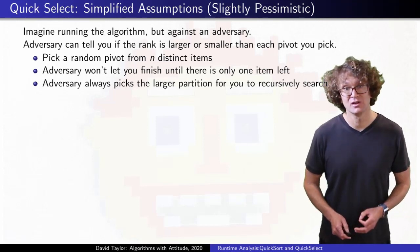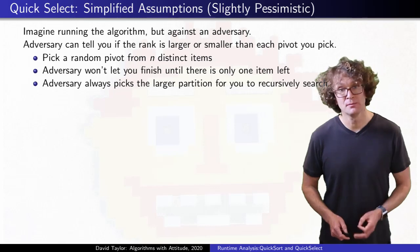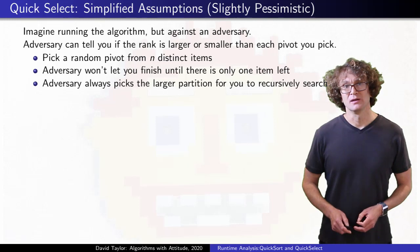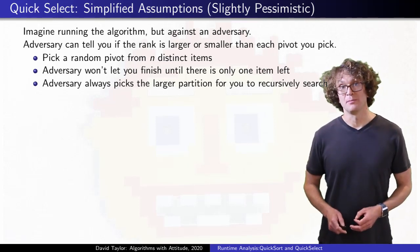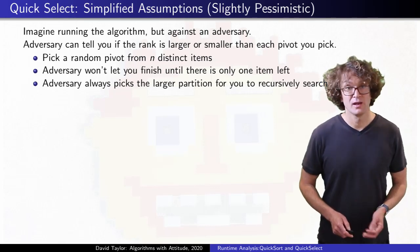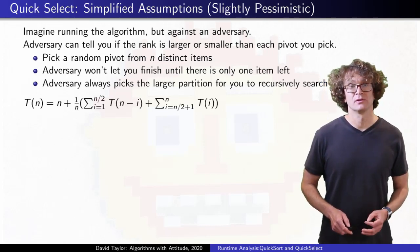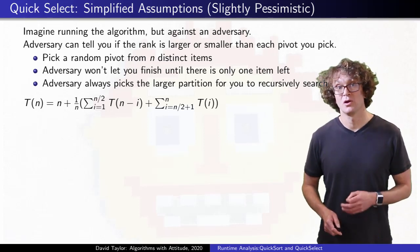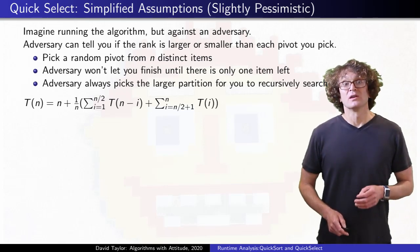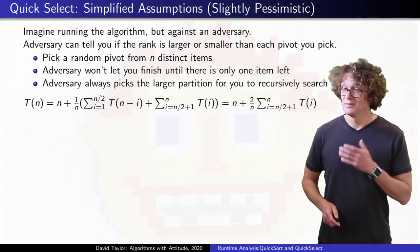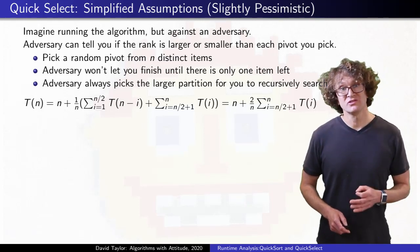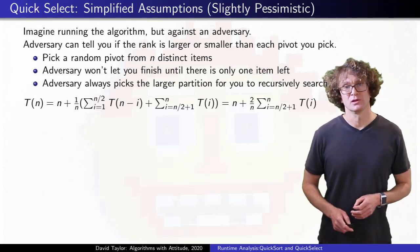So given n distinct items, we still assume that we pick a random item as our pivot, but unless there is just one item, we never get lucky and pick it, and we always have to recursively step into whichever partition has more elements. If your pivot has rank less than n over 2, you need to search everything that's larger than it, and if the pivot has rank larger than n over 2, you need to search everything smaller. We can simplify some repeated terms, and that recurrence relation is pessimistic, but also more realistic than our first pessimistic recurrence relation.